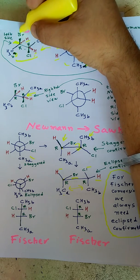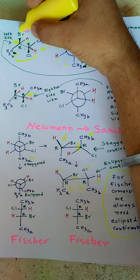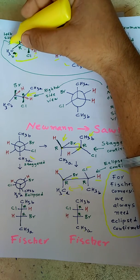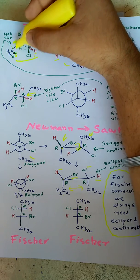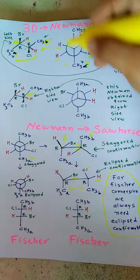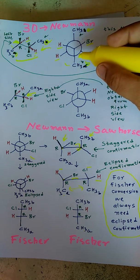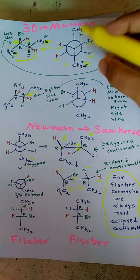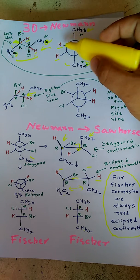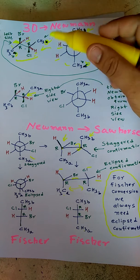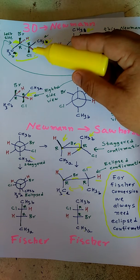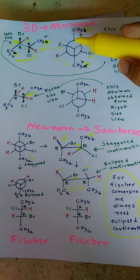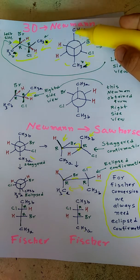From this center, bromine is on my right side, hydrogen is on my left side, and methyl is below — methyl is below and in the plane. Bromine is on the right-hand side and hydrogen is on the left-hand side. Now see this carbon — this methyl is above and in the plane.